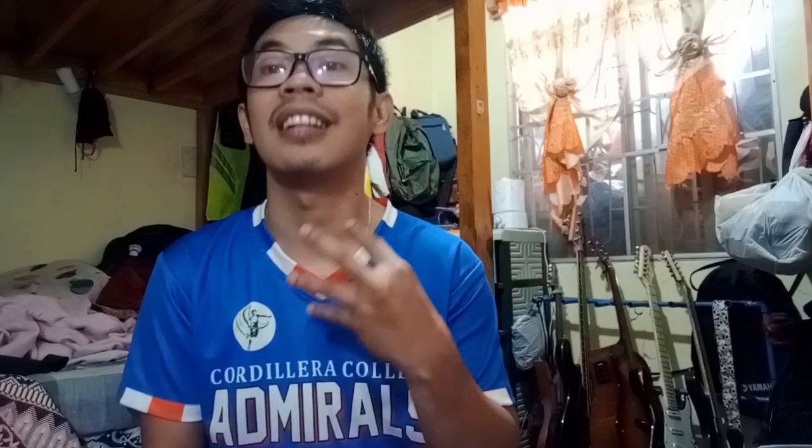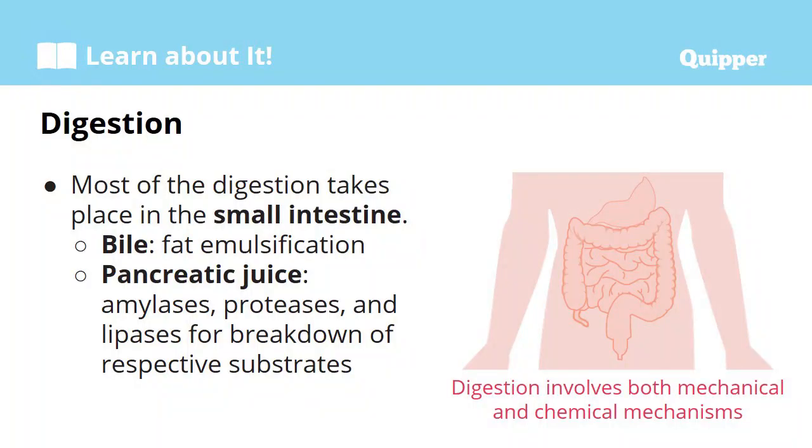The liver dumps the bile into the small intestine. That's why in your handout it is related to the small intestine — it is where your liver is actually dumping the bile. Aside from that, you have the other accessory organ, which is your pancreas — the organ I mentioned last time that becomes problematic when you encounter a disease called diabetes. From the pancreatic juice, we have many enzymes: amylases, proteases, and lipases.